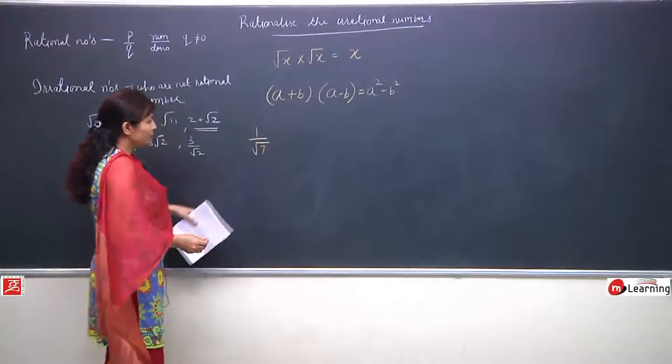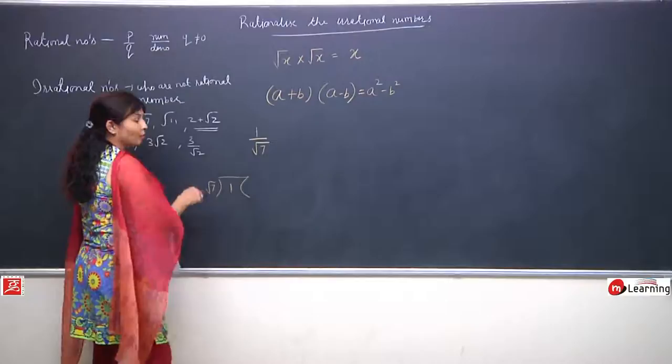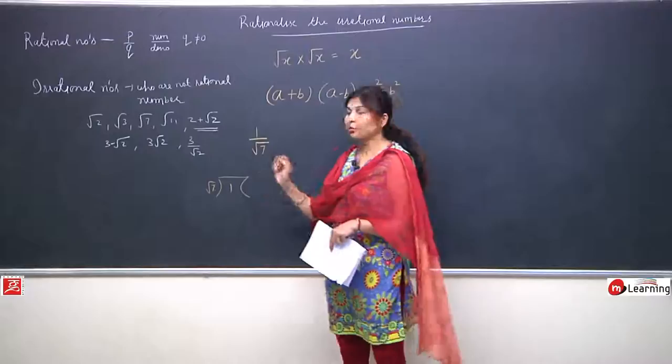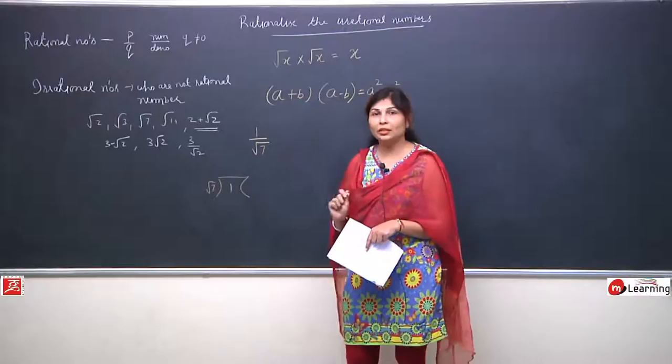Now I am taking a small example: I have 1 by root 7. Normally if we solve this, it means we have to divide 1 by root 7. We would first find the value of root 7 by calculator and then divide - that would be very complicated. We will not do that. We will very easily remove it from the denominator, because we have just learned the theory of rationalization.